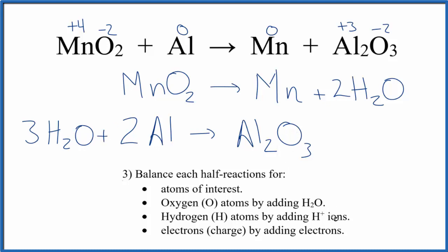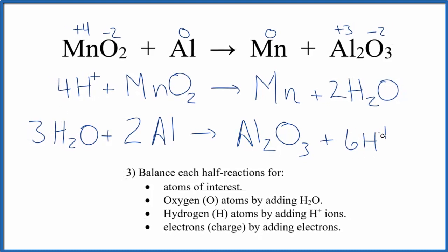To balance the hydrogen atoms, we'll add H+. After all, we're balancing this in acidic medium, so we'll have H+ ions to work with. Two times two is four, so let's add four hydrogen ions here. Three times two is six, so let's add six hydrogen ions on this side.